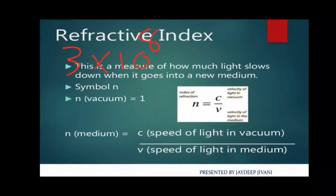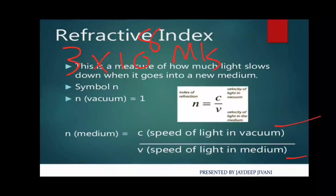The speed of light in vacuum is 3 × 10⁸ meters per second. When we calculate the refractive index of vacuum itself, we put the speed of light in vacuum on both numerator and denominator — 3 × 10⁸ divided by 3 × 10⁸ — so these cancel out and the refractive index of vacuum equals 1.